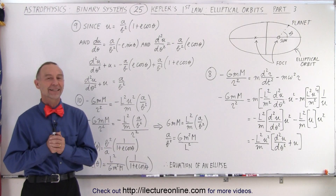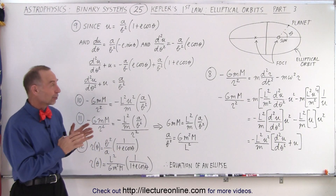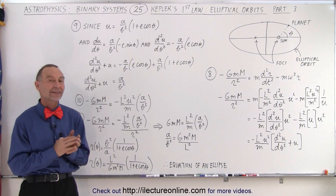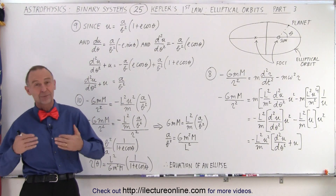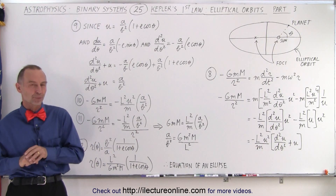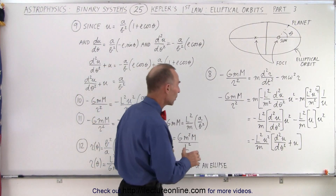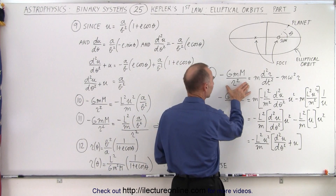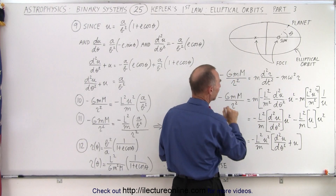Welcome to my lecture online. Here we are on Part 3, the final part, to show that yes indeed Kepler's first law — that planets move in elliptical orbits — is indeed true. Continuing on with where we left off, we had the equation of gravity: the force of gravity being equal to minus G times big M over r squared, from the universal equation of gravity.